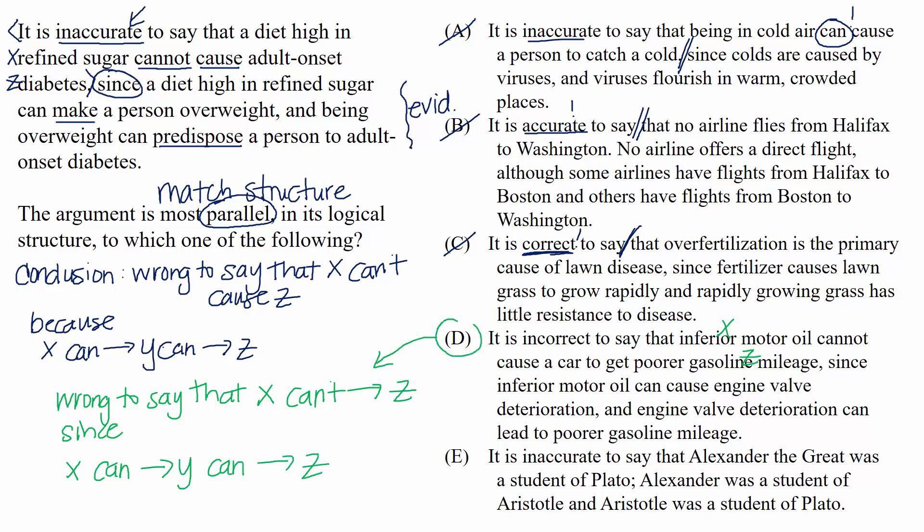If you prefer to think of it non-symbolically, the arguer is disagreeing with anyone who says that inferior motor oil can't cause poor gas mileage, because there's this intermediate cause of engine valve deterioration that connects both of them. That is what's happening in the passage as well.